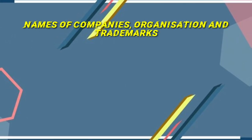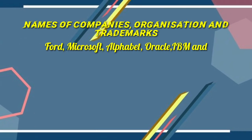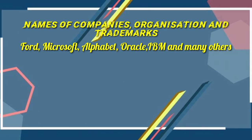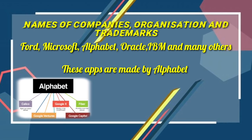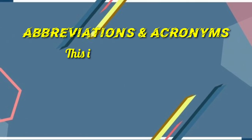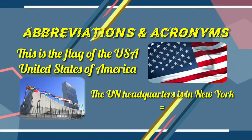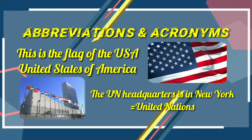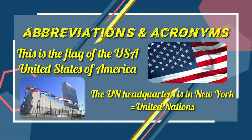Names of companies, organizations and trademarks — some examples are Forbes, Microsoft, Alphabet, Oracle, IBM, etc. Example: 'These ads are made by Alphabet.' Here A in Alphabet is a capital because it is the name of the company. Abbreviations and acronyms — for example, USA is an abbreviation where all three capital letters represent the given words United States of America, which is also a country.